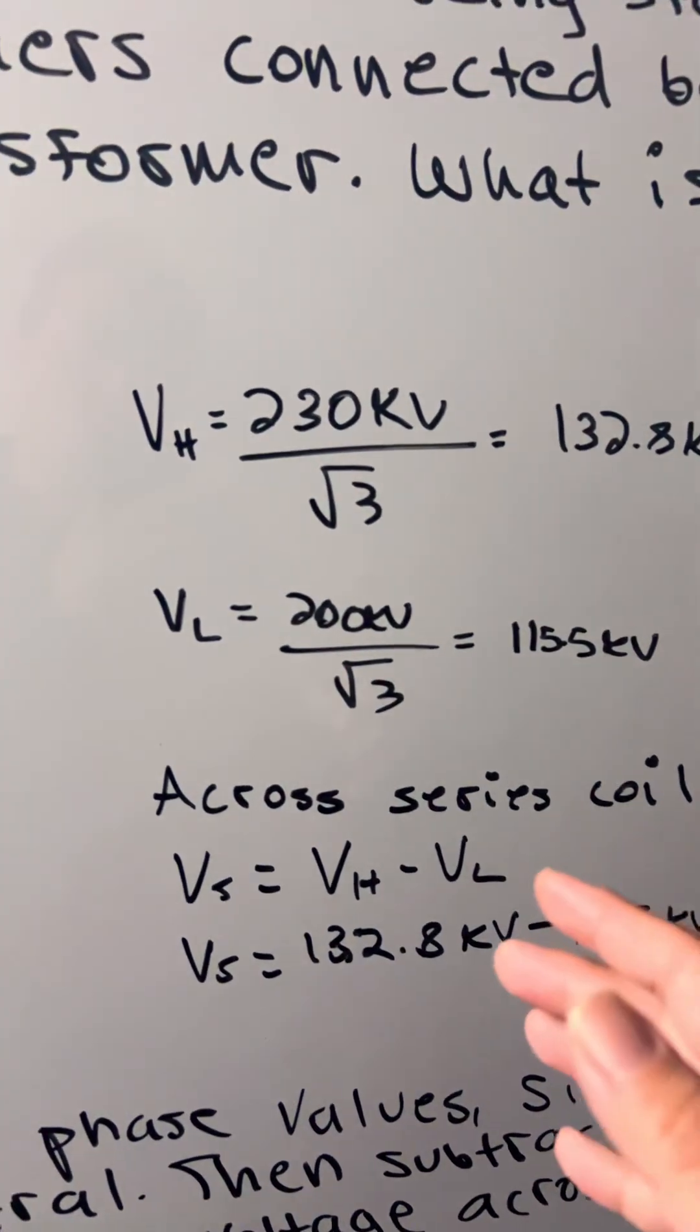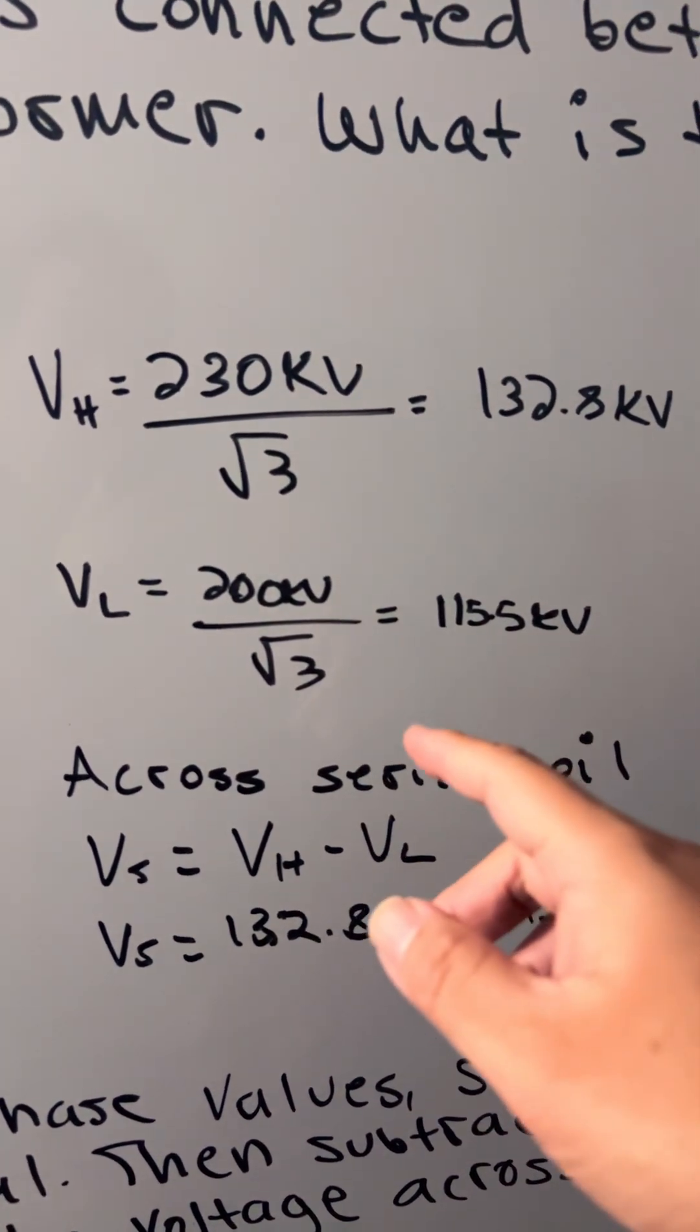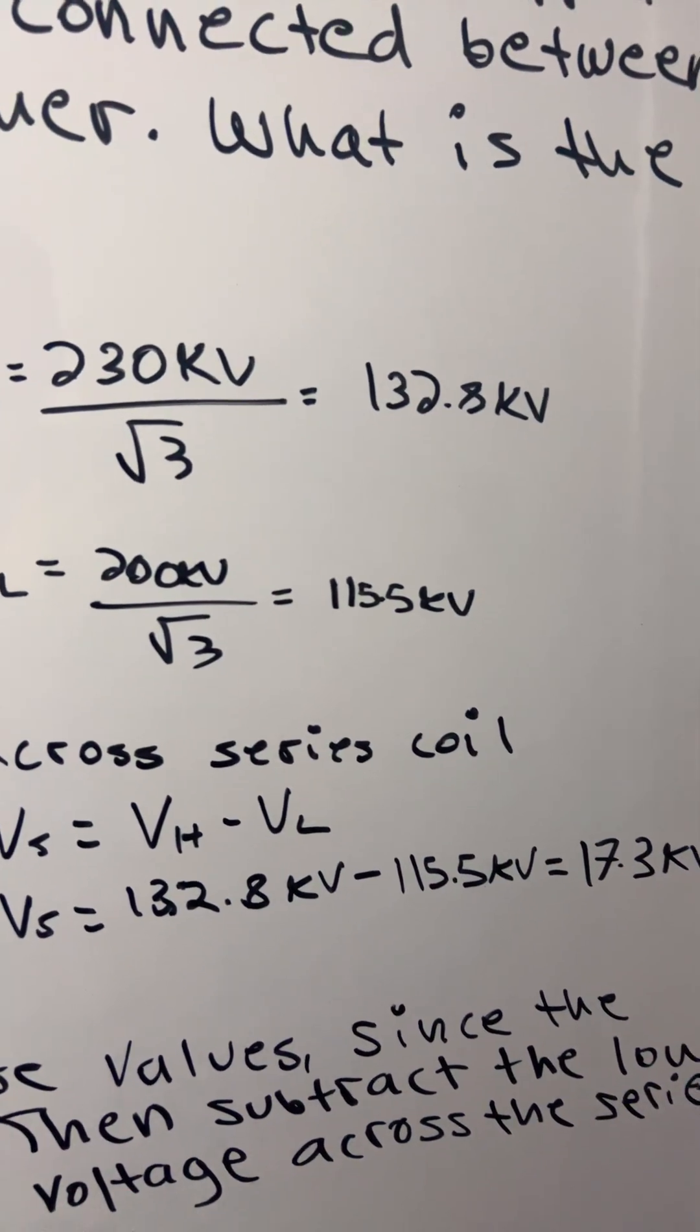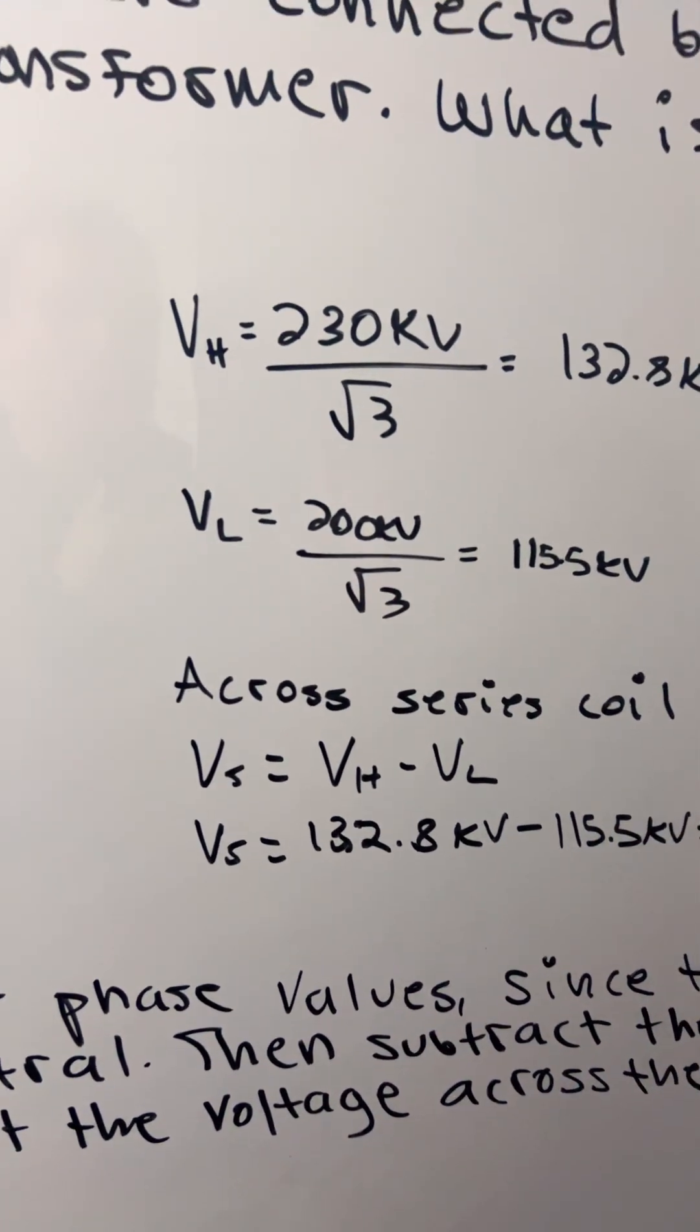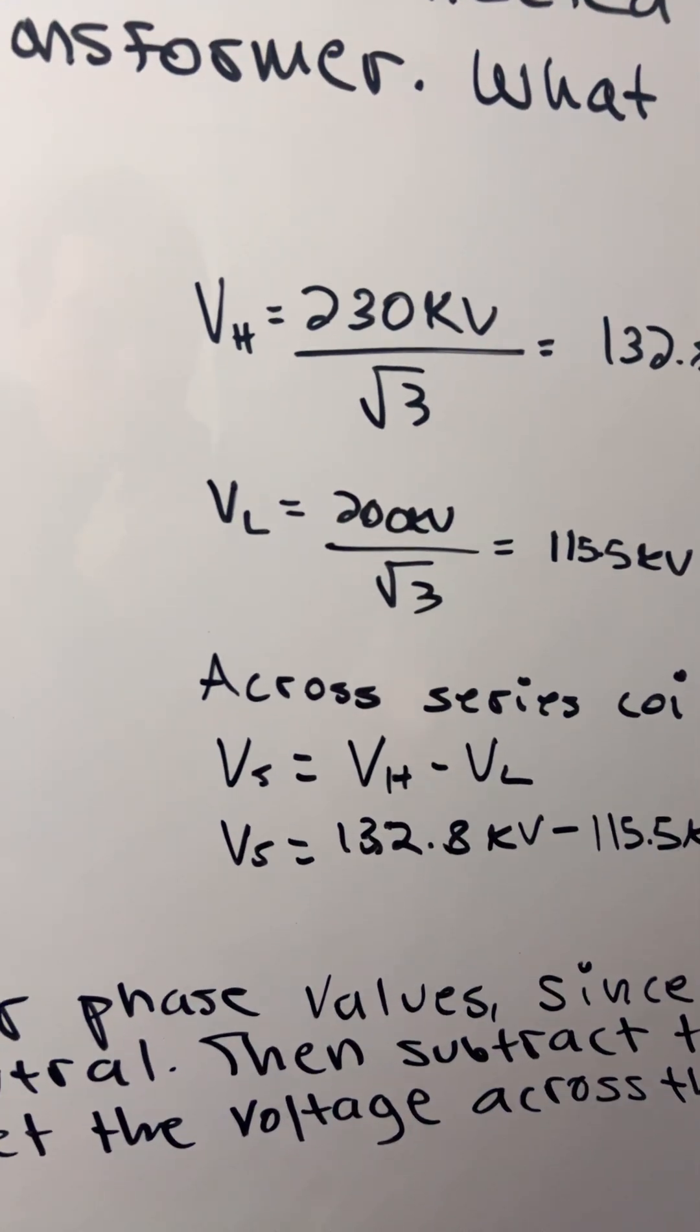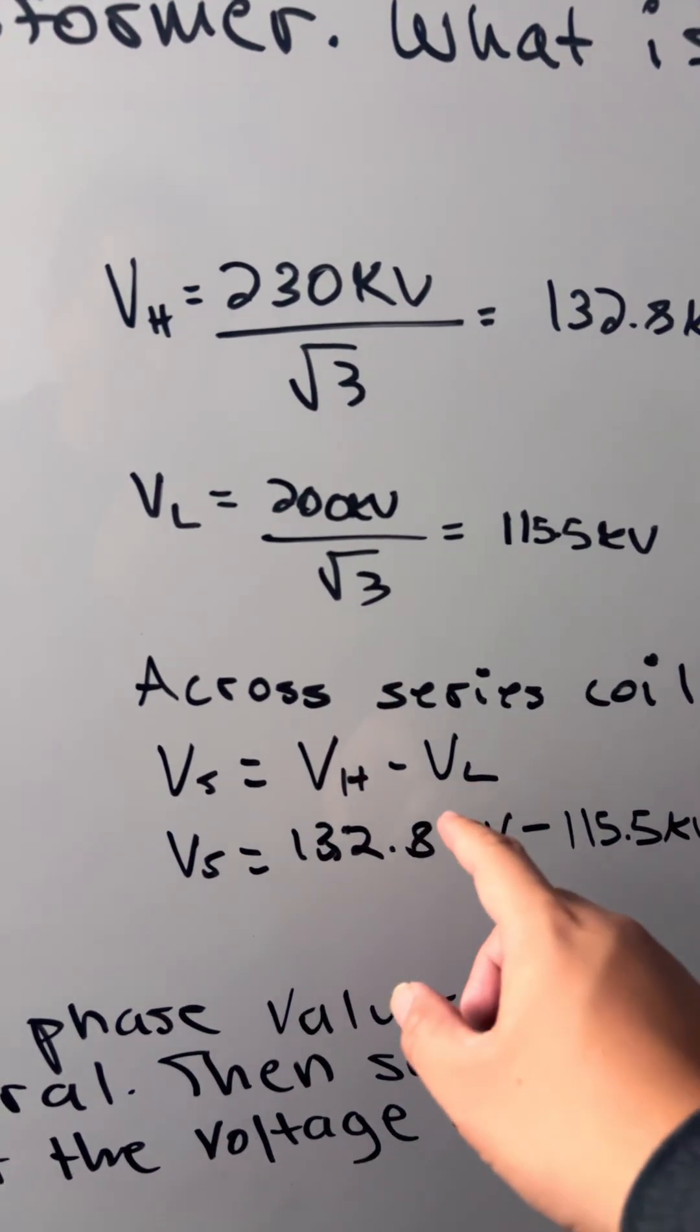Then we're going to do the same thing for the lower voltage, so 200 kV divided by square root of 3 equals 115.5 kV. The last step is to find the series coil voltage, so Vs equals Vh minus Vl.